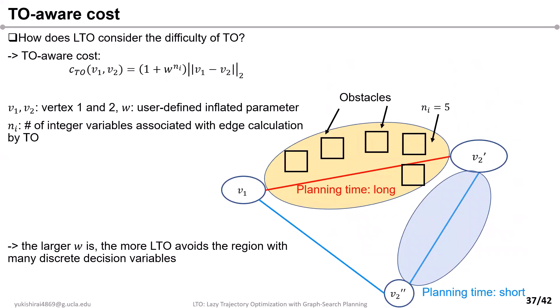We also propose a TO-aware cost to account for the difficulty of TO. This edge cost enables LTO to consider the computational complexity of TO. The TO-aware cost is defined as the distance between two vertices times a coefficient term. W is a user-defined inflation parameter that balances the optimality of the trajectory and the planning time. For example, since the region associated with the red trajectory has more discrete variables, the cost of that trajectory is more expensive than that of the blue trajectory. By setting W based on user specifications, this cost enables LTO to choose the path that prioritizes either the optimality of the path or the planning time.